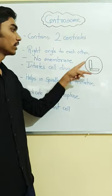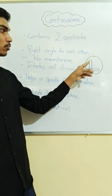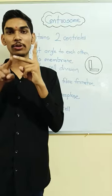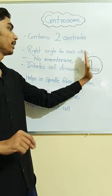So centrosome, it is without membrane, contains two centrioles. It contains two centrioles that are also right-angled to each other, in the sense, perpendicular to each other.